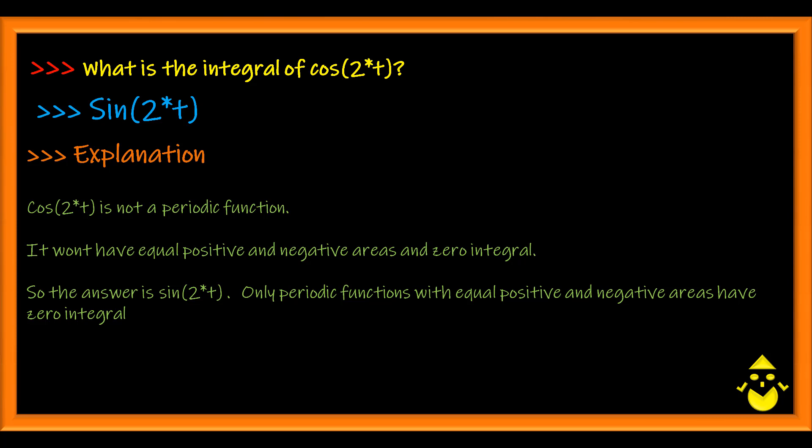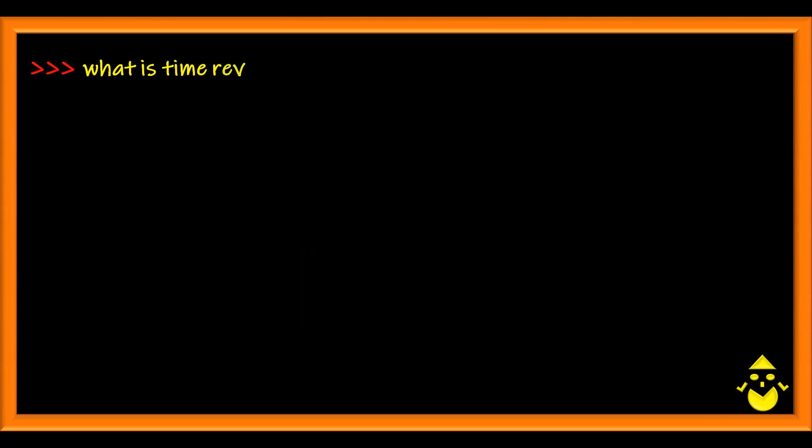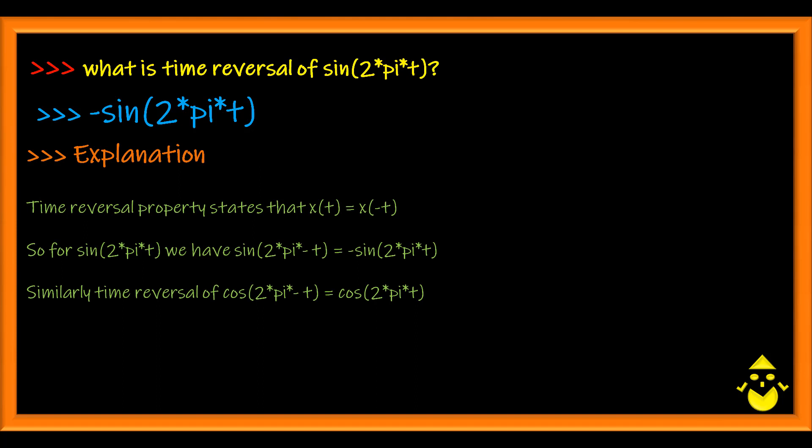What is time reversal of sine 2 pi t? The time reversal of sine 2 pi t is not cosine 2 pi t, it is minus sine 2 pi t. So the time reversal property states that x of t is taken as x of minus t. So for sine 2 pi t, we have sine 2 pi minus t, which is equal to minus sine 2 pi t. Similarly, the time reversal of cosine 2 pi t is equal to cosine 2 pi t.